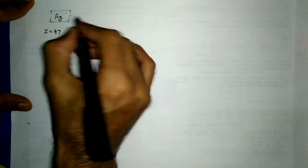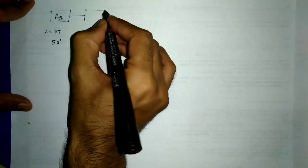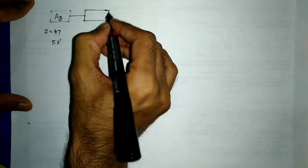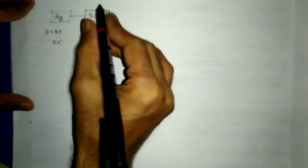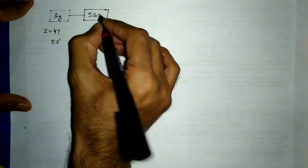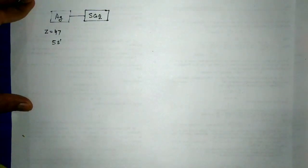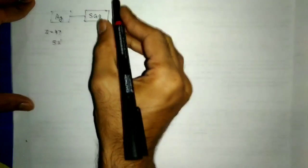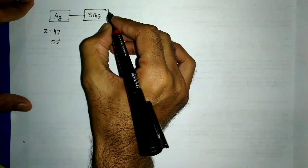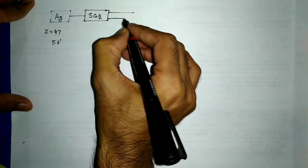We need to find the total angular momentum and spin of the silver atom. If these silver atoms pass through the Stern-Gerlach (SG) experimental arrangement where the magnetic field is along the Z-axis, then as expected, the beam is divided into two components.